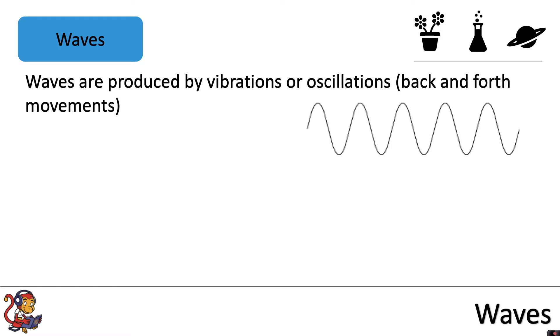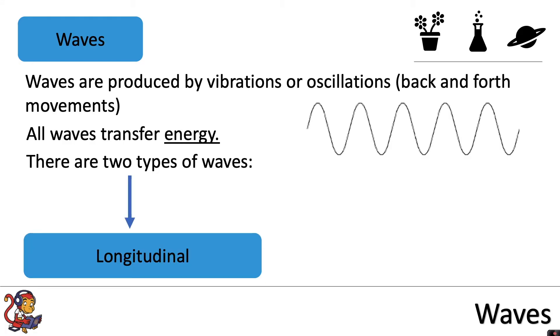Waves are produced by vibrations or oscillations which means back and forth movements. All waves transfer energy and there are two types of waves: longitudinal waves and transverse waves.